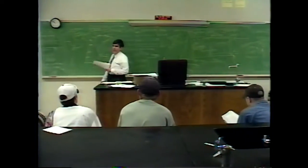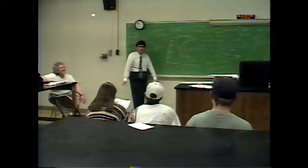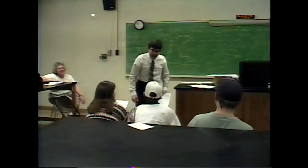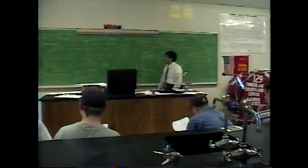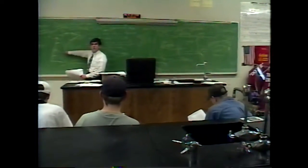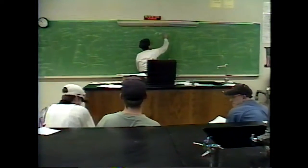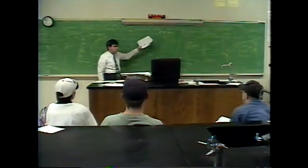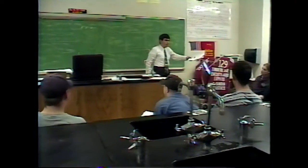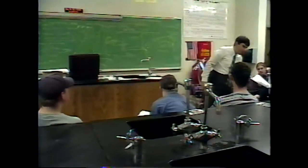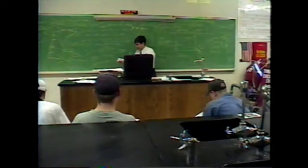Wind is caused by differences in air pressure. And fronts are also caused by differences in air pressure. Cold fronts normally move from west to east, but in the summertime they can sometimes come down from Maine — that's a back door cold front. That's caused by the differences between the cool ocean and the warmer land.